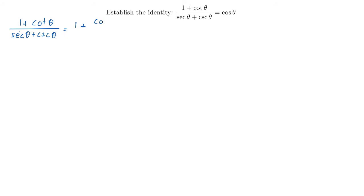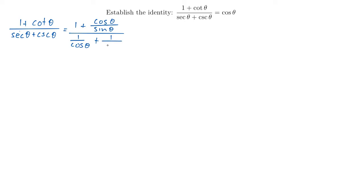So if we do that, we'll write 1 plus, instead of cotangent, we'll write cosine of theta divided by sine theta. And then we have that whole thing divided by secant of theta — remember it is 1 over cosine theta — plus cosecant of theta, which is going to be 1 over sine theta.